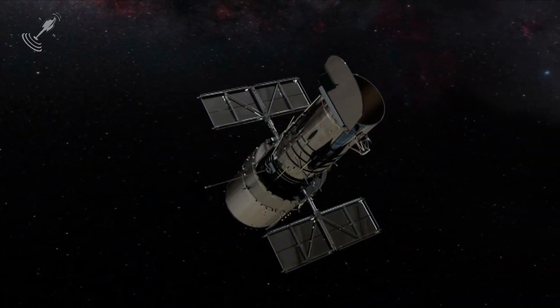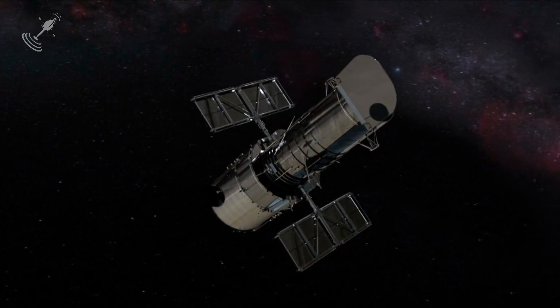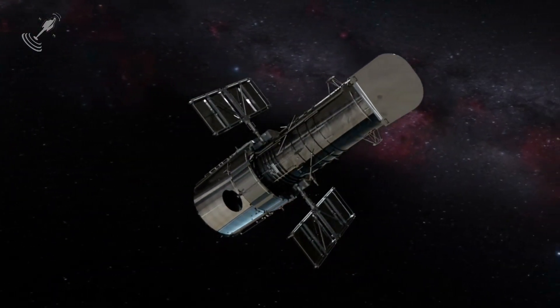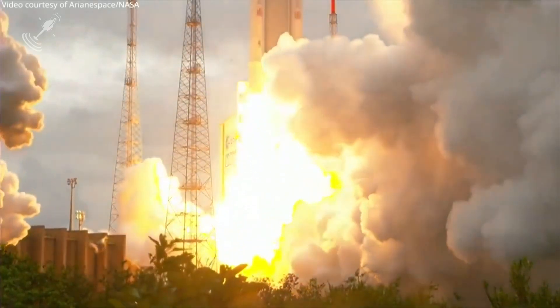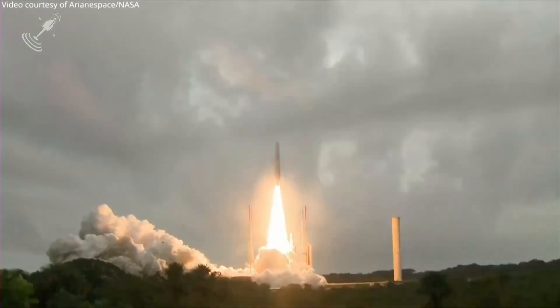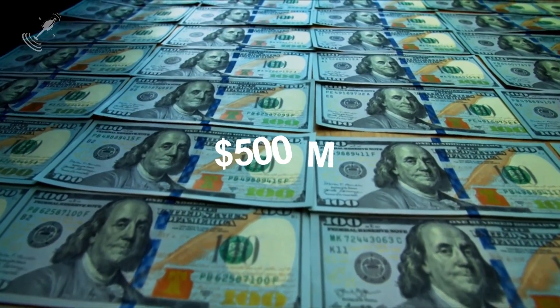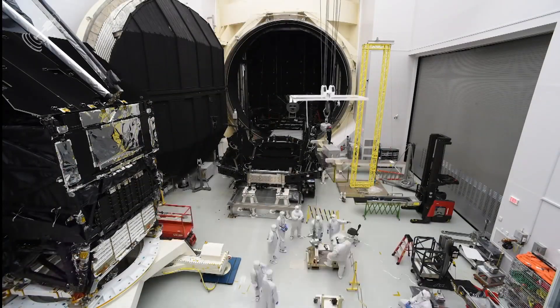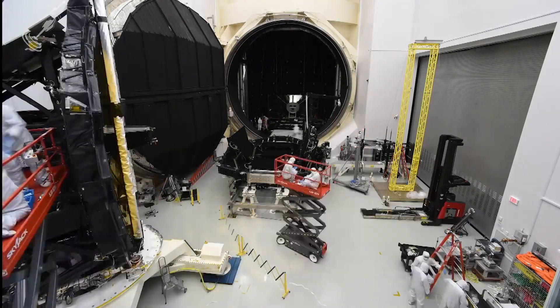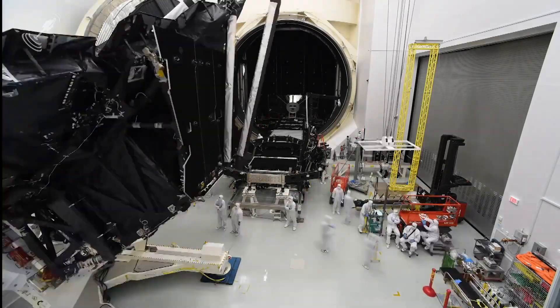Soon after the Hubble Space Telescope became operational, scientists began planning the next telescope. In the early 1990s, the planning began for the launch of the JWST. The initial budget for the project was $500 million at the time. The design and work progressed on the project, and by 2005, a considerable redesign of the telescope had occurred.